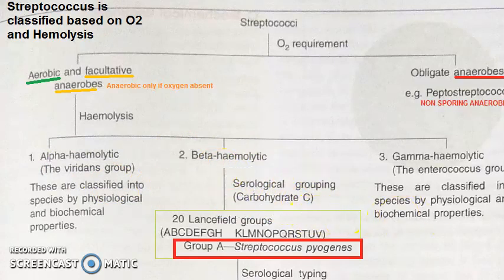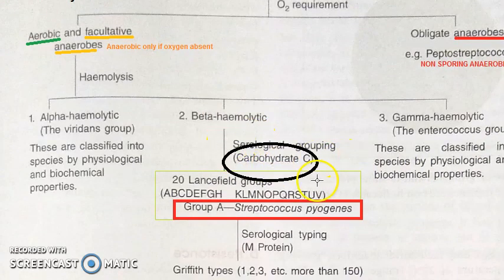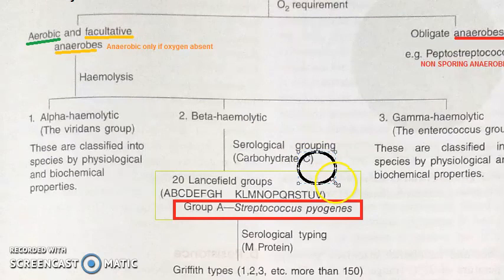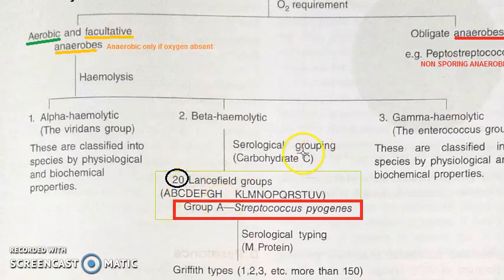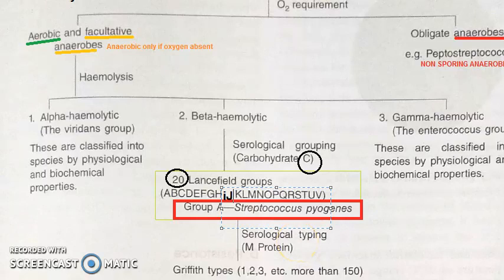Under beta hemolytic, based on the carbohydrate C antigen, you have 20 Lansfield groups. These groups go from A to V, but I and J are missing — so I and J are absent. The sequence is A, B, C, D, F, G, H, then K through V.